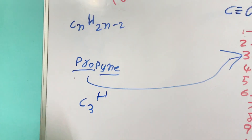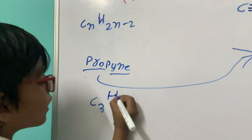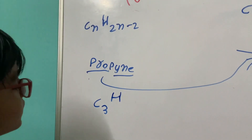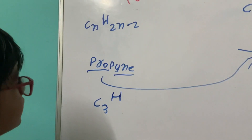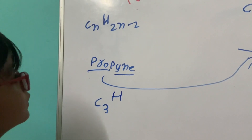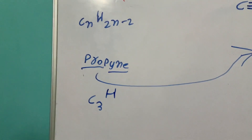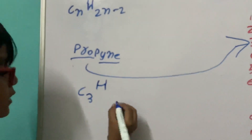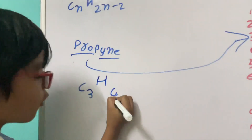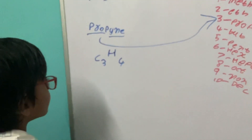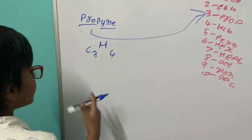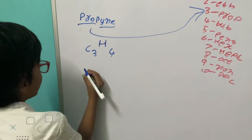What is 2 times 3? 6. 6 minus 2 is 4. So propine has 3 carbon atoms and 4 hydrogen atoms.